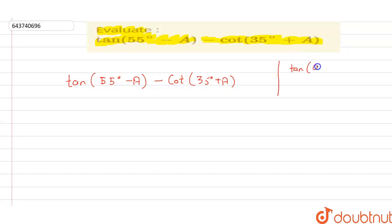that tan(90° - θ) changes to cot(θ). So we can write this equation again as tan of 90° minus 35° plus A